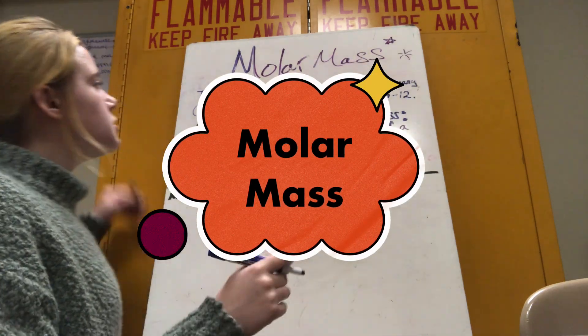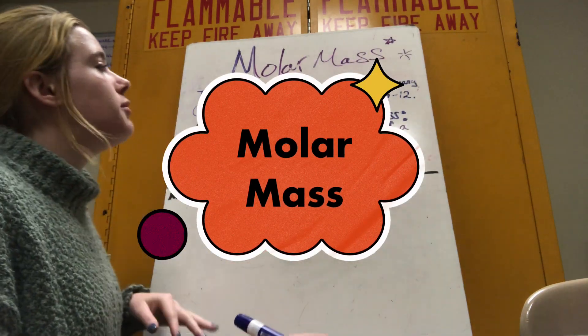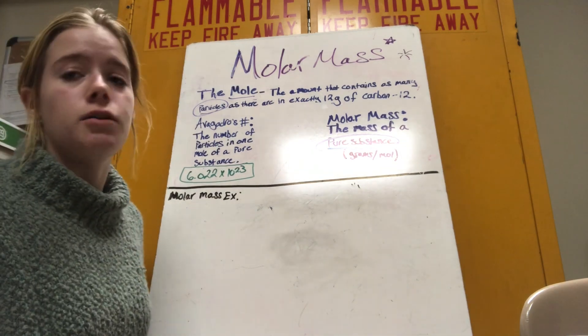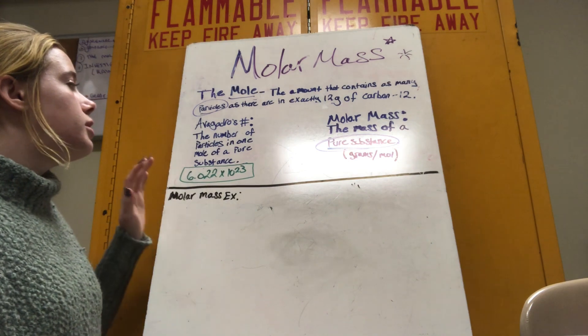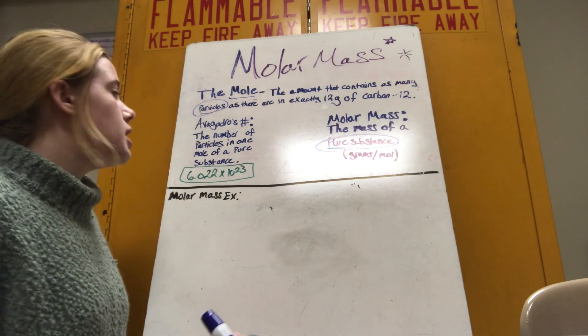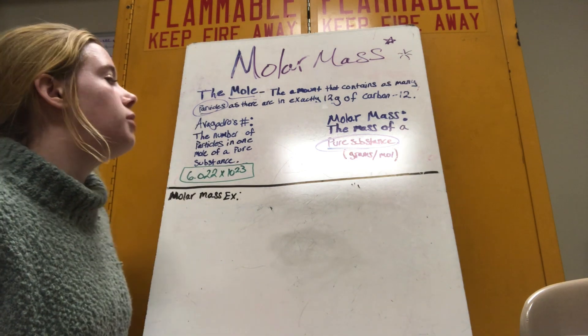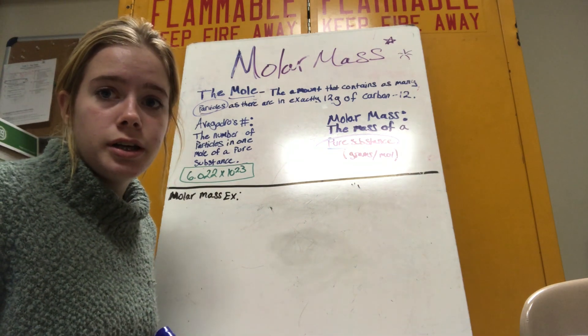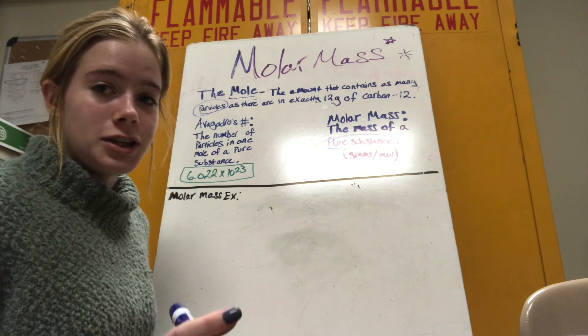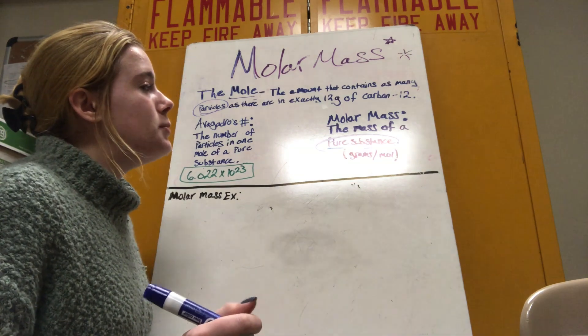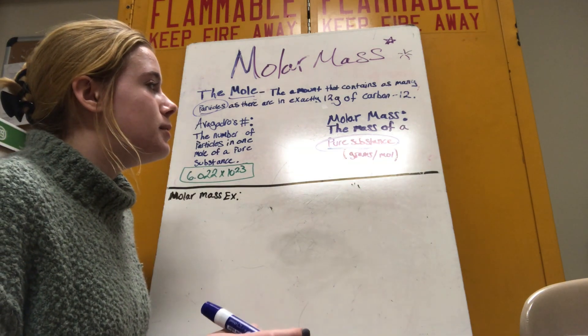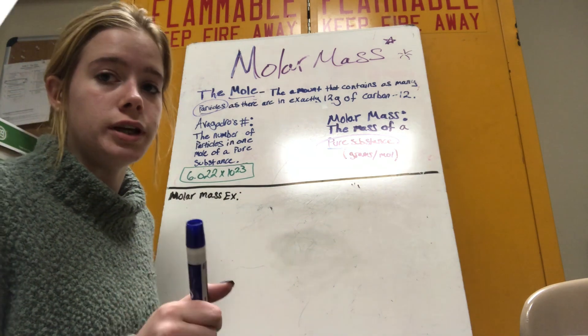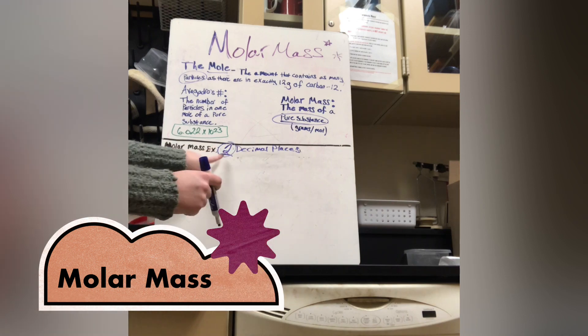Molar mass. So the mole, which is the amount that contains as many particles as there are in exactly 12 grams of carbon-12. Avogadro's number is the number of particles in one mole of a pure substance, and 6.022 times 10 to the 23rd will be very important for later, so keep that in mind. And then molar mass is the mass of a pure substance, and we use grams per mole for our units. We carry it by two decimal places.